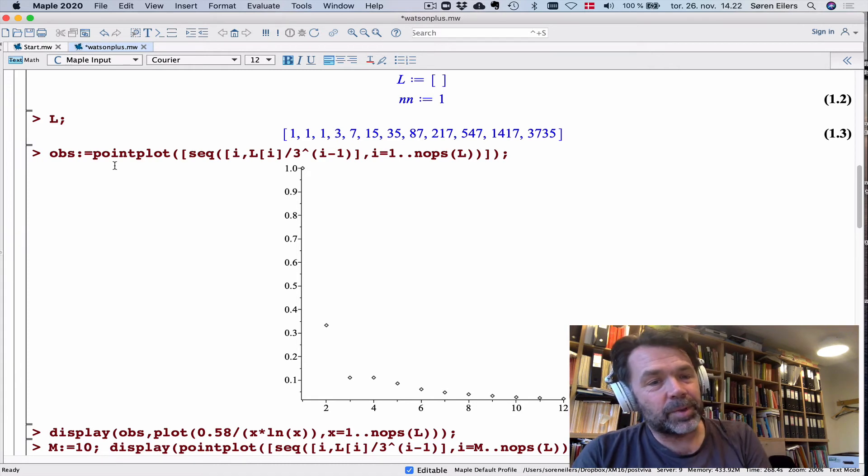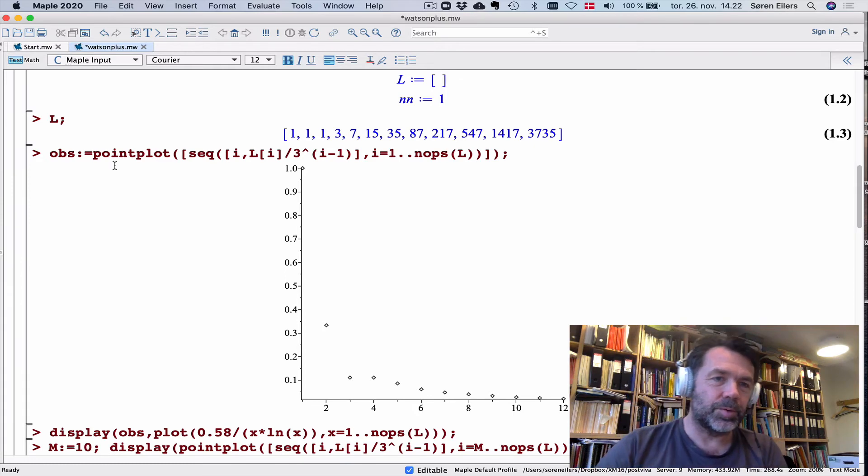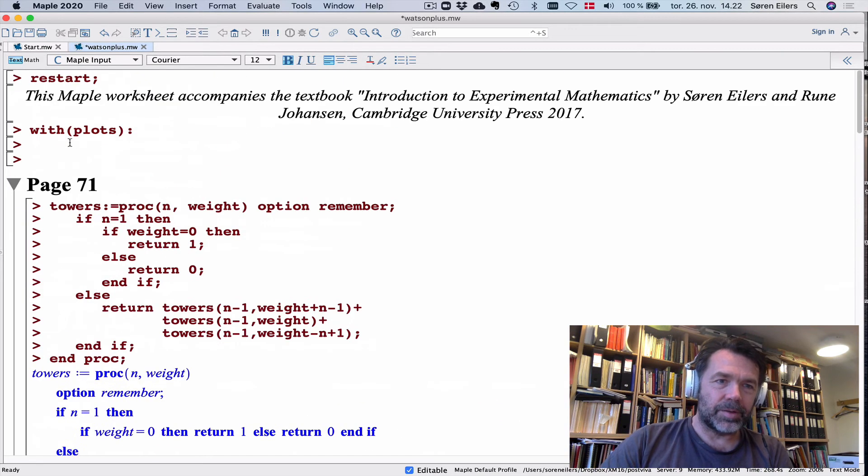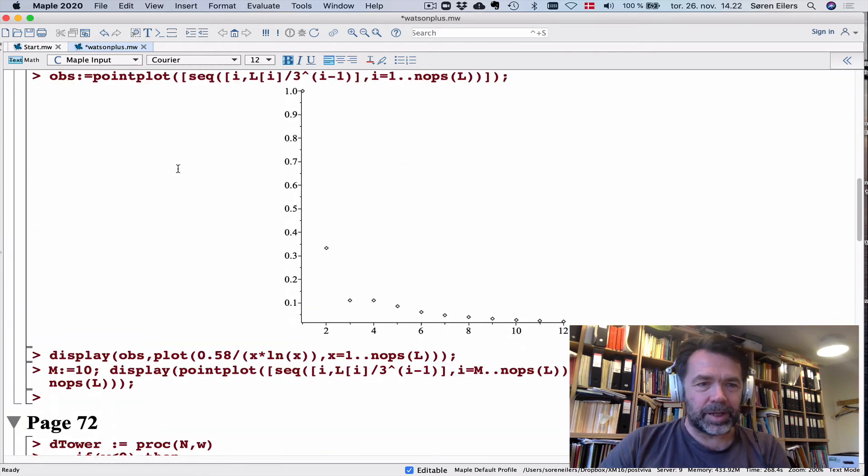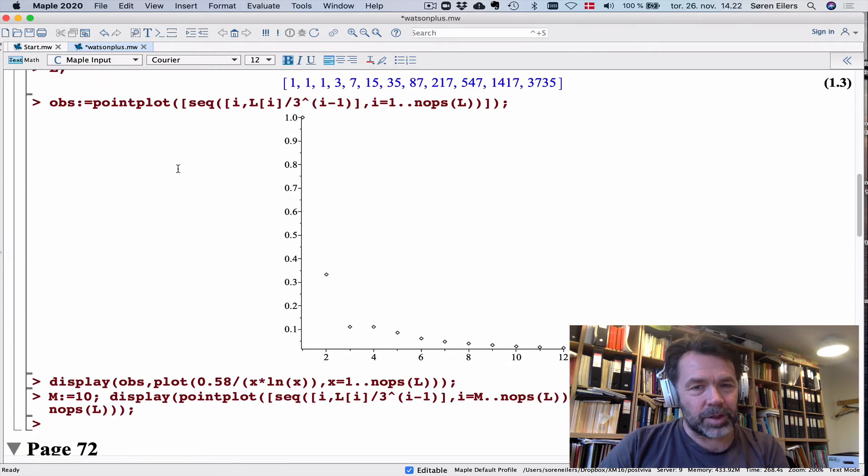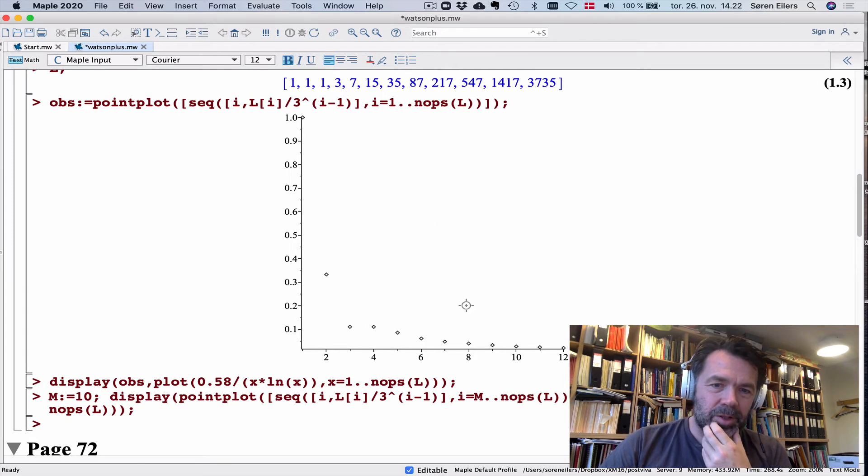Point plot, by the way, is something which is not automatically loaded. When you start Maple, you have to use "with plots" to load this command. What Watson did with these 12 observations is that he looked at these numbers.